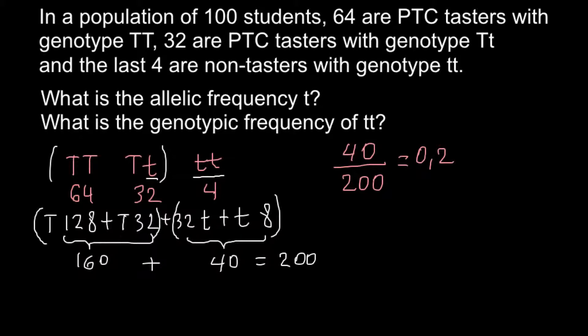This is the frequency of the recessive allele t. If you need the answer as a percentage, multiply by 100, which gives us 20%.